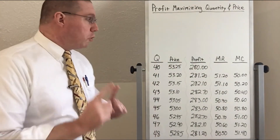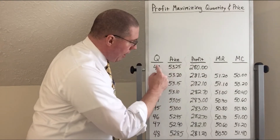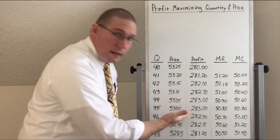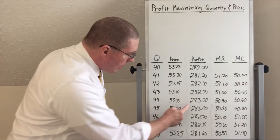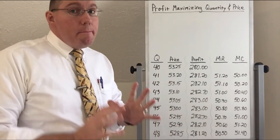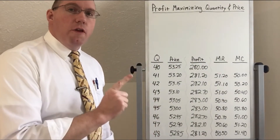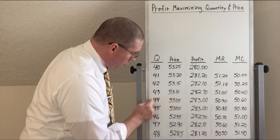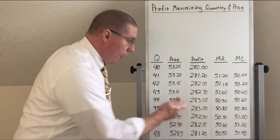Look at all these numbers. What quantity and what price would give this firm the highest level of profit? As quantity goes up, profit is increasing. But then when it gets up to 283, any quantity higher than this — as we go up to 46, 47, and 48 — what happens to the profit? The profit actually starts decreasing. That is a phenomenon in business: there is usually a quantity that is ideal for getting the most profit. In this case there are actually two quantities, because at a quantity of 44 we have 283 profit, and at a quantity of 45 we also have 283 profit.